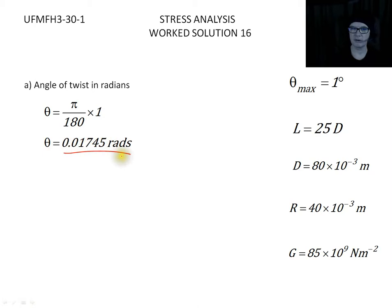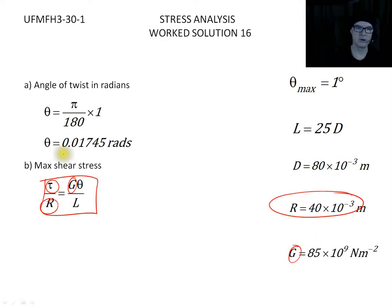Next is to find the maximum shear stress, so we want to go to the torsion engineers equations. We're going to use the second column and the third column of the equations. We're looking for the maximum shear stress. We know what the radius is, we know what the modulus is, we've worked out the angle in terms of radians.